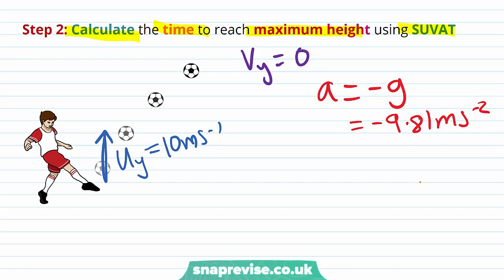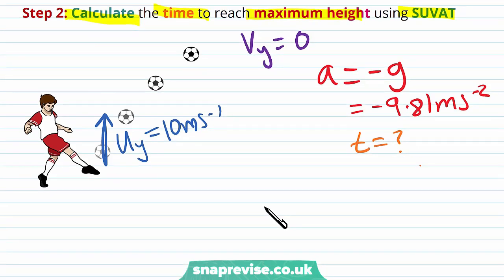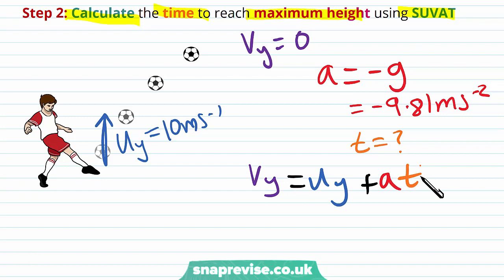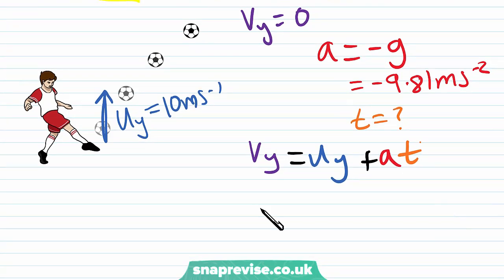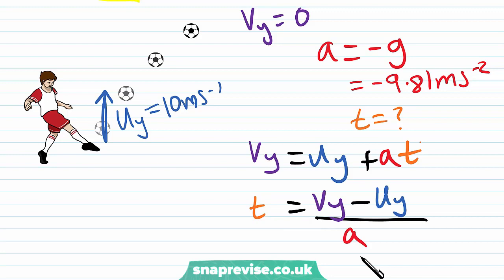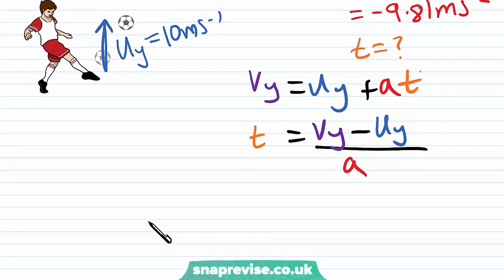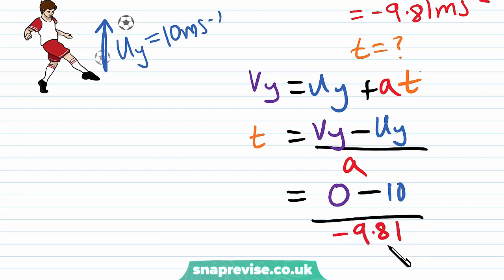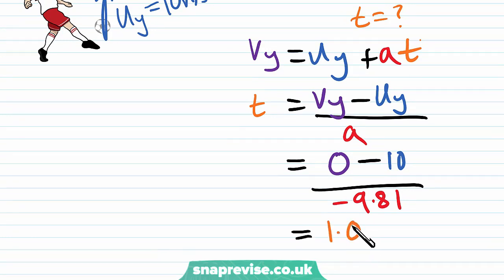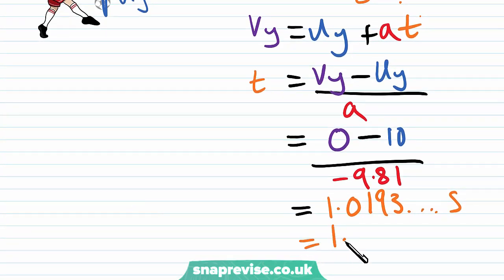We want to find the time t to reach maximum height. Using vy equals uy plus at, rearranging for t gives t equals vy minus uy divided by a. Substituting in: t equals 0 minus 10 divided by minus 9.81, giving t equal to 1.0193 seconds, which to three significant figures is 1.02 seconds.